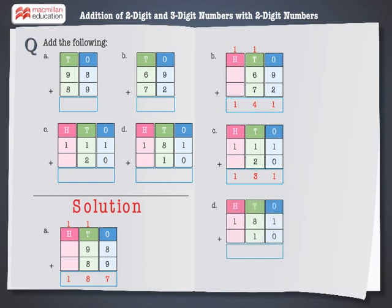Finally, let's solve the last problem: 181 plus 10. Add the digits at the 1's place: 1 plus 0 is equal to 1. Now add the digits at the 10's place: 8 plus 1 is equal to 9. Now add the digits at the 100's place: 1 plus 0 is equal to 1. Thus, 181 plus 10 is equal to 191.